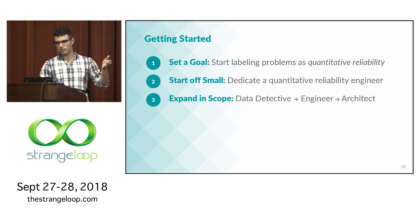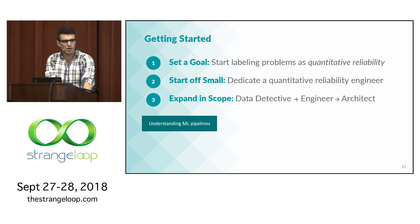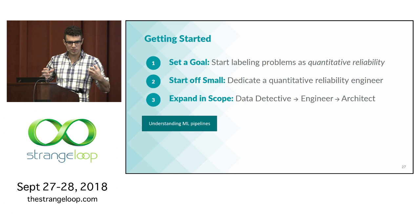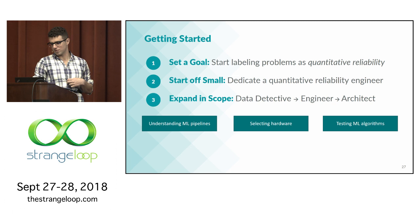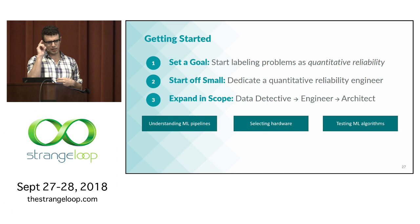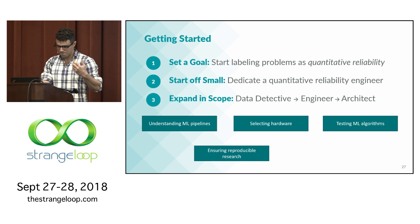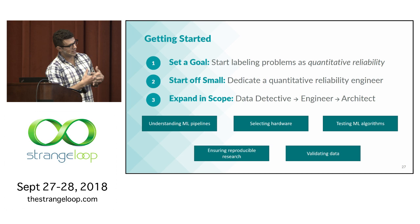There are a lot of other problems that would fall under the umbrella of quantitative reliability. For instance, understanding your machine learning pipelines — there was a great talk last year about diving into the black box, and that falls under QR as a trade-off between result quality and the cost of digging in versus producing new models. There's selecting hardware, which can have really interesting impacts on quantitative results. Testing your machine learning algorithms — figuring out how to validate them. Ensuring reproducible research. And just validating your data — we get data in from everywhere, and making sure it's sane is quite a bit of work that can really impact your result quality.